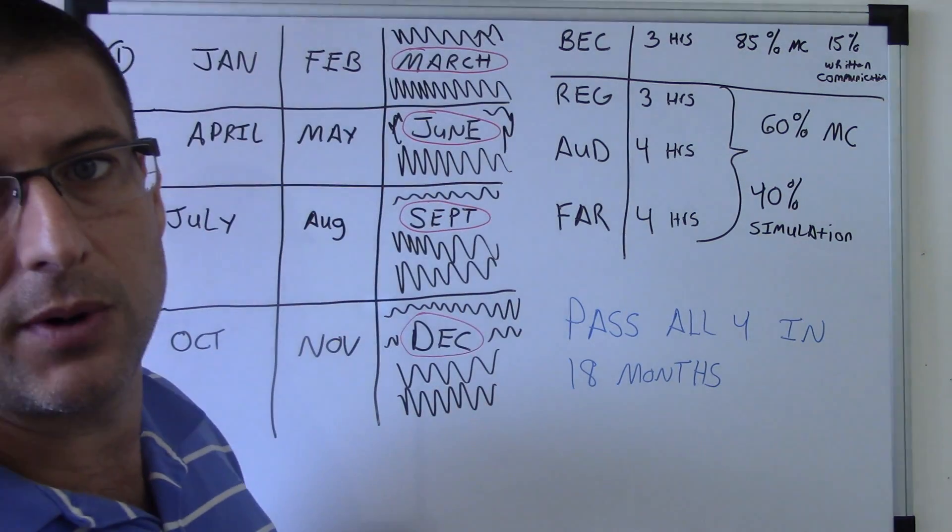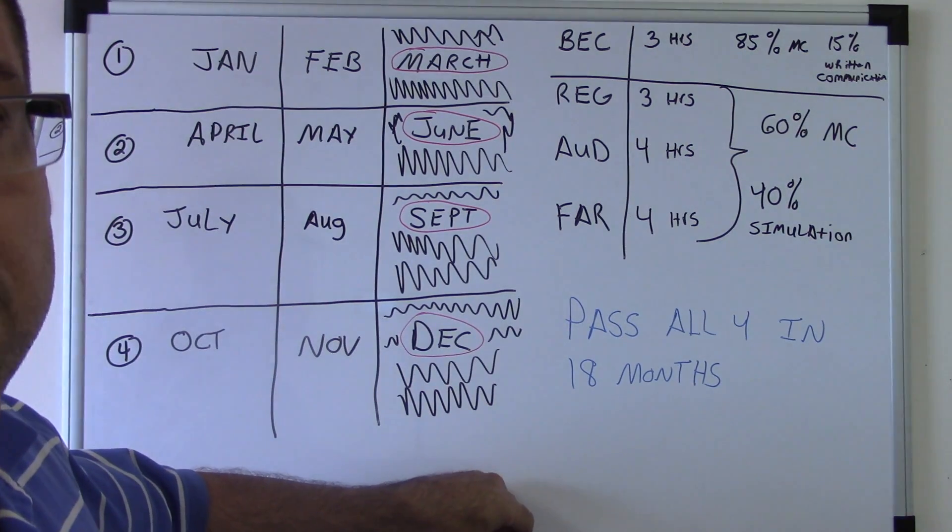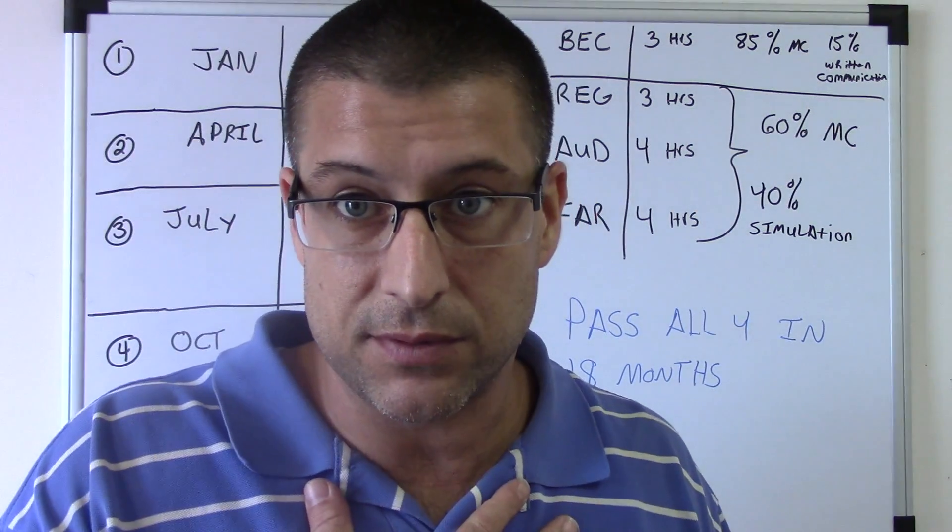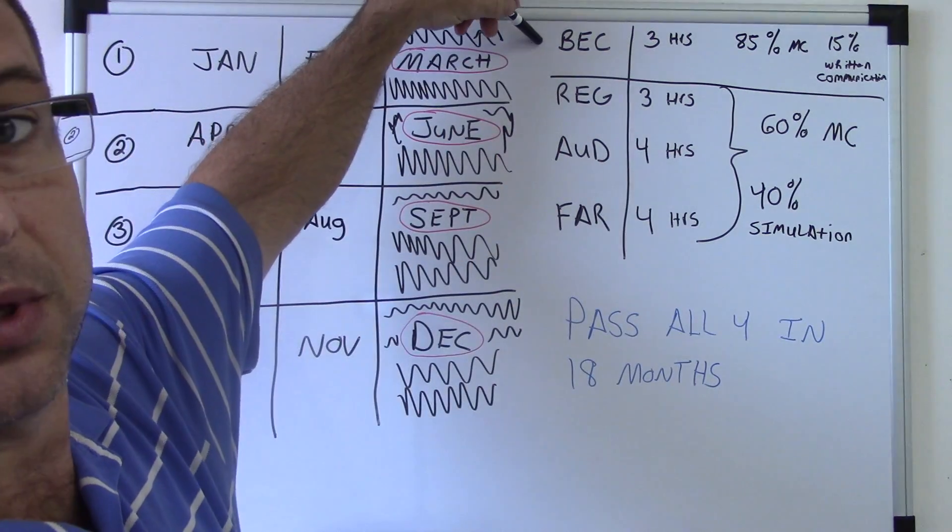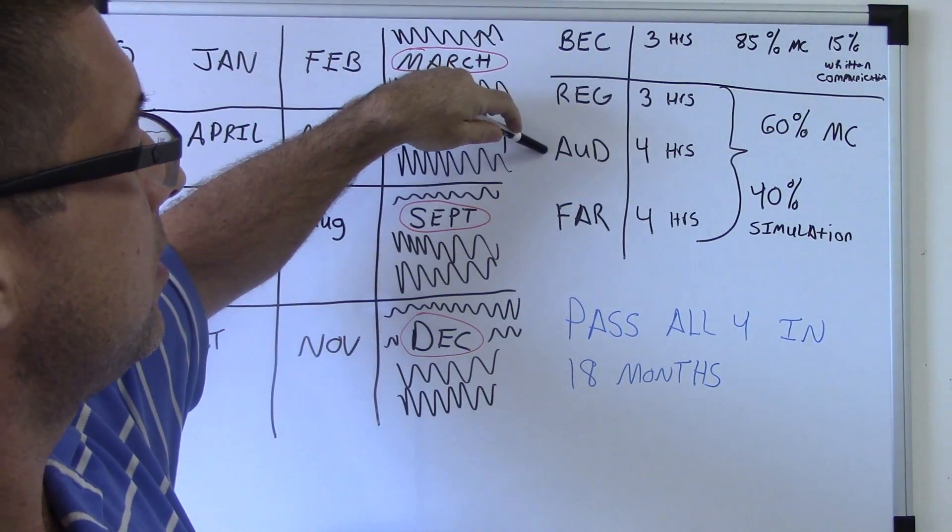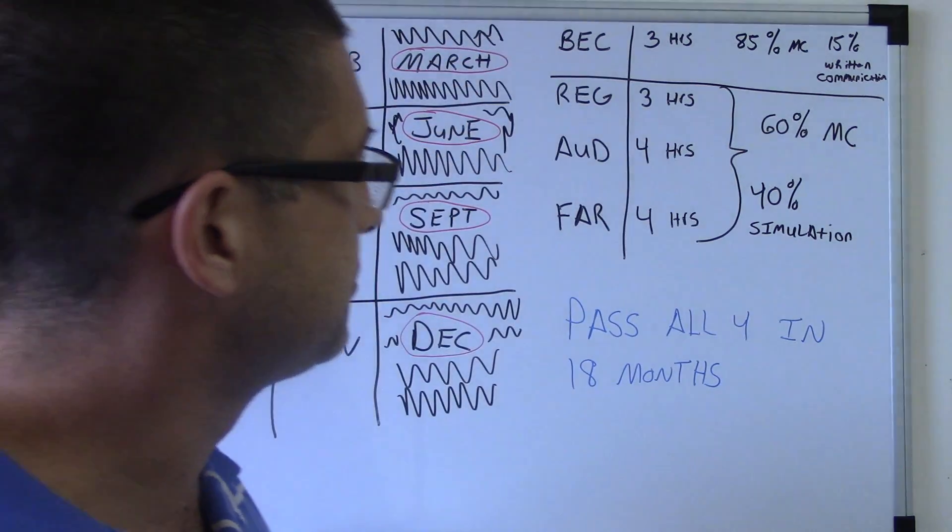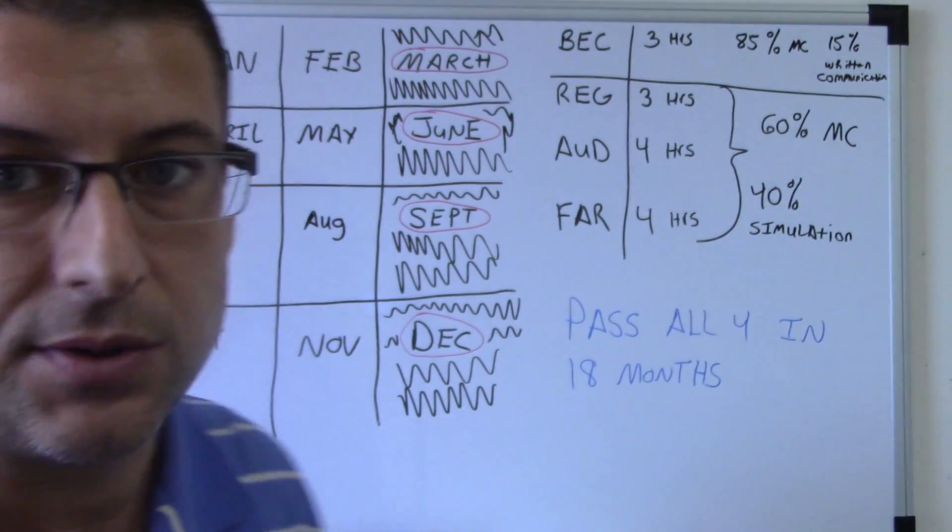But now, for quick, I'll give you if I was to do it over right now, I would probably do BEC first, then REG, then audit, then FAR. Why did I say that? Why would I do it like that?